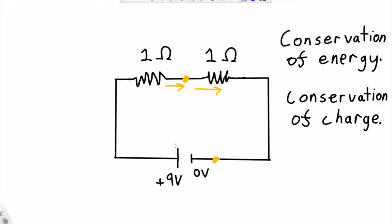So, using these two rules, I can make all sorts of predictions about circuits, and in this case here, I'm going to use them to predict what the current is going to be through this circuit here.